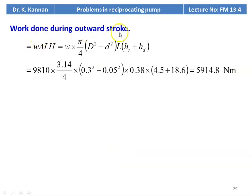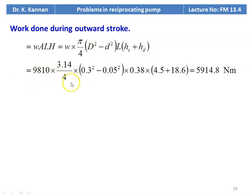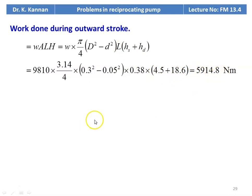Work done during the outward stroke: W × A × L × H, where A = π/4 × (D² − d²), accounting for the piston rod on one side. Substituting: 9810 × (3.14/4) × (0.3² − 0.05²) × 0.38 × (4.5 + 18.6) = 5914.8 Newton meter (joules).